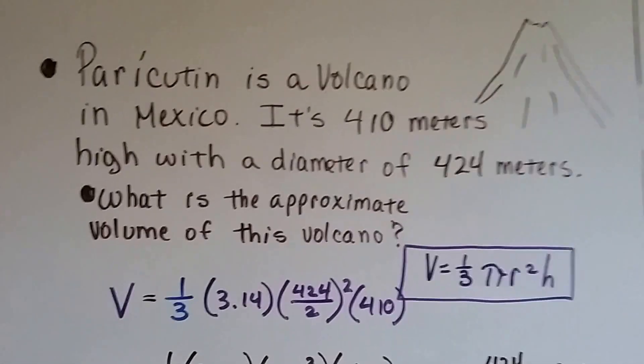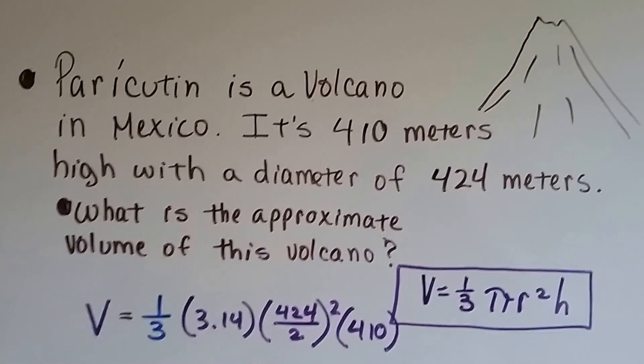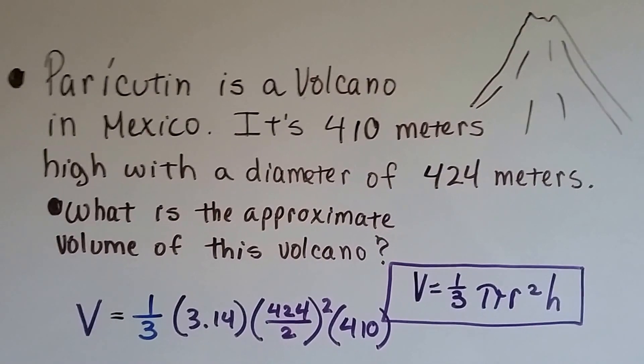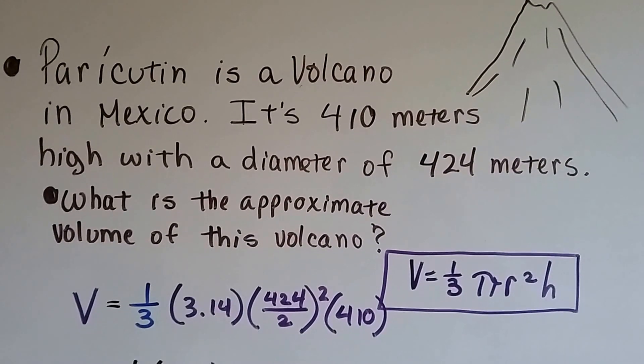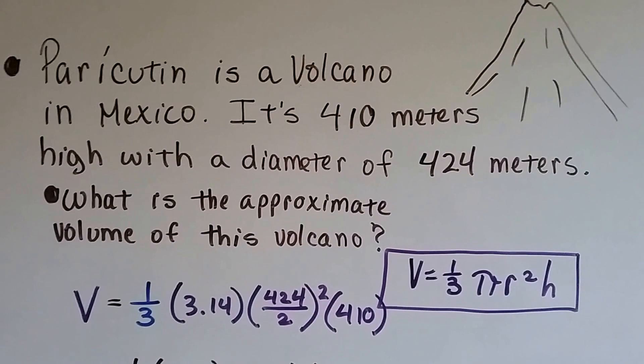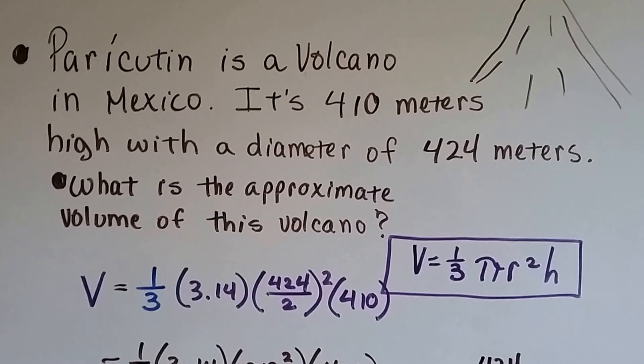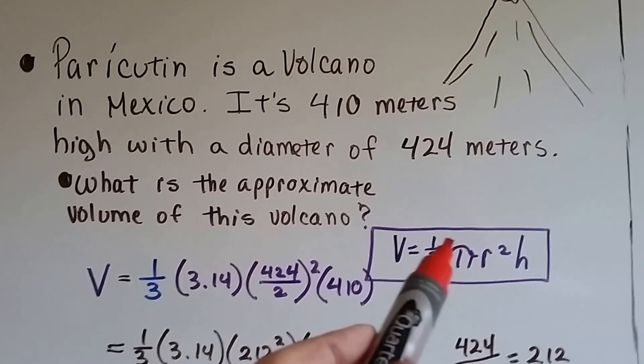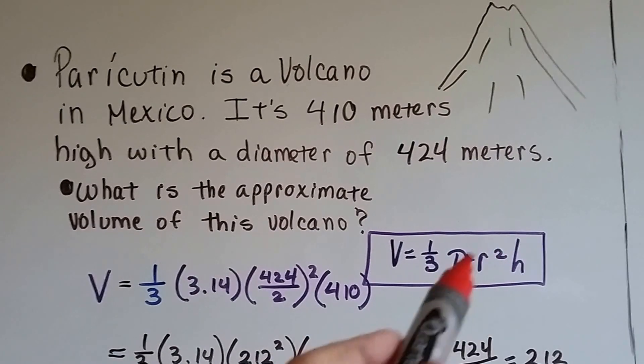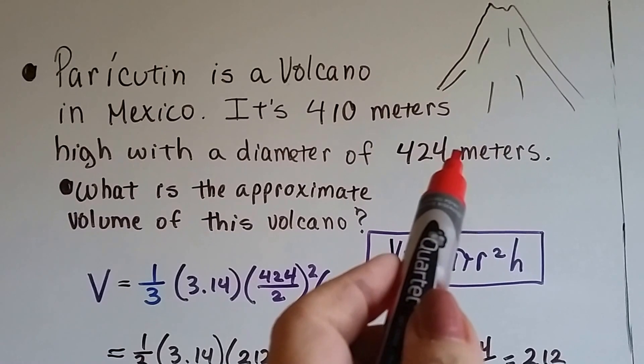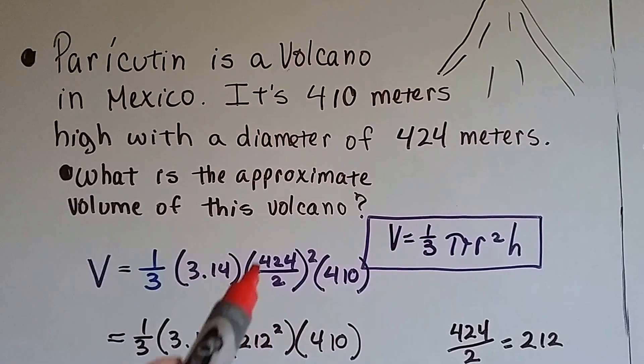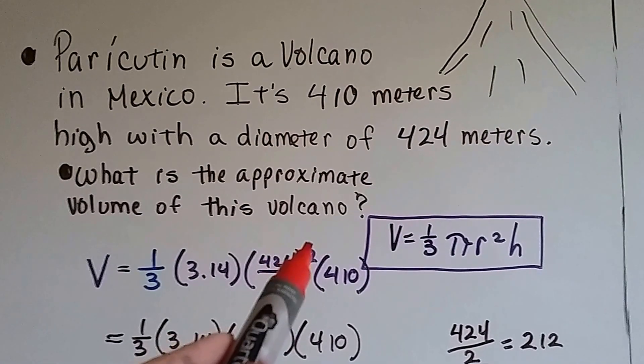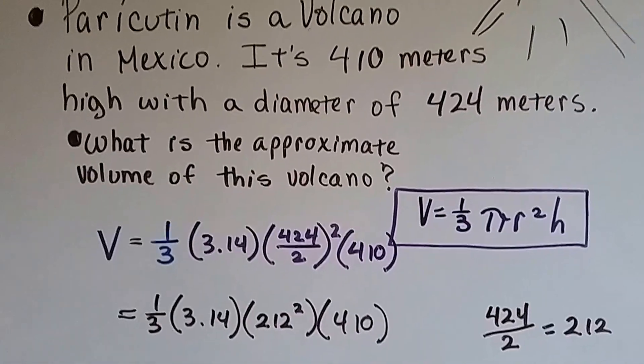Let's do a real one. Paracutin is a volcano in Mexico, and it's 410 meters high with a diameter of 424 meters. So what's the approximate volume of this volcano? So here's our volume formula. Pi r squared is the base, and again, we've got a diameter. So we've got to use our d divided by 2 in parentheses squared on the outside.